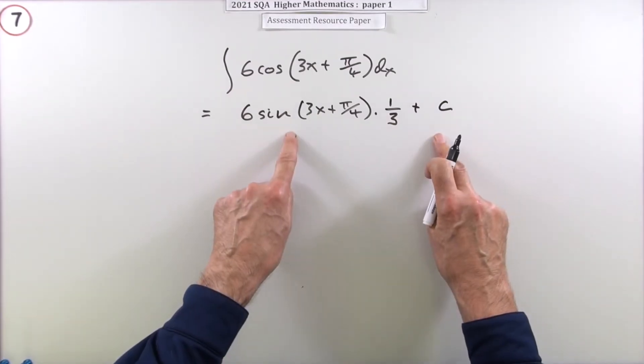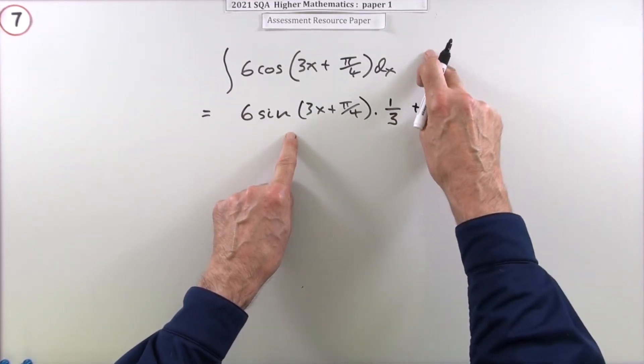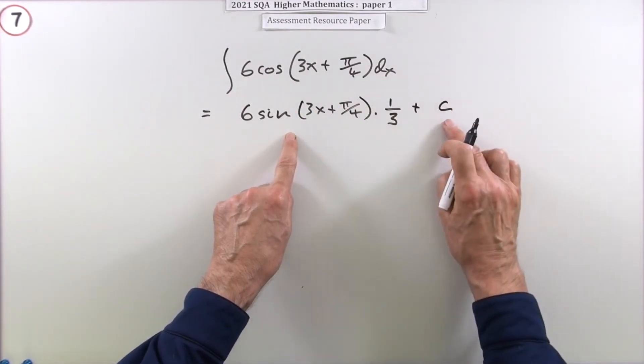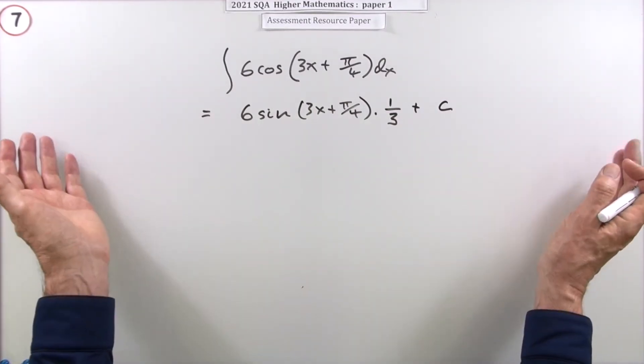And don't forget to add on a constant. Because when you differentiate, a constant would disappear. So you have no idea if there was a number there or not. And that is it.